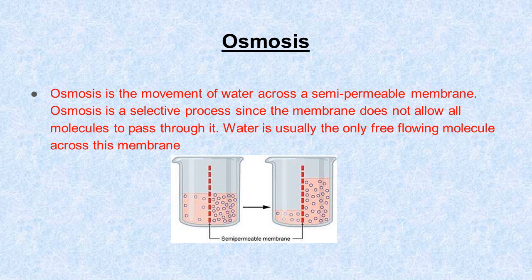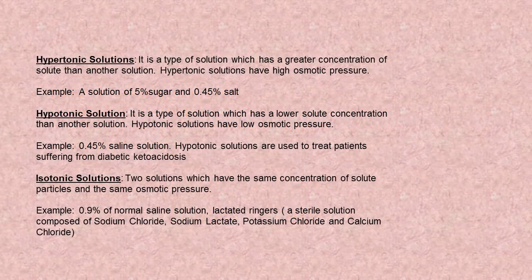Osmosis is the movement of water across a semi-permeable membrane. Osmosis is a selective process since the membrane does not allow all molecules to pass through it. These substances are at very high concentration. Now let's come to different types of solutions.